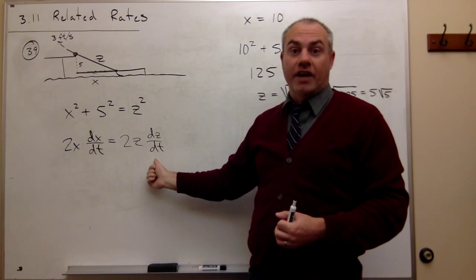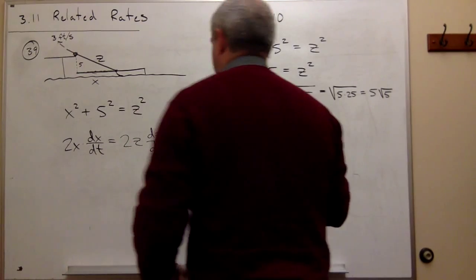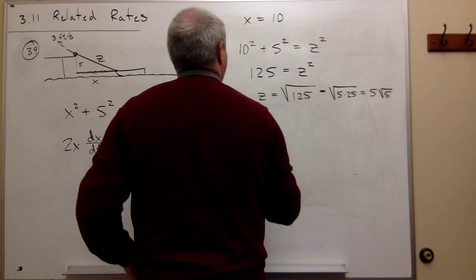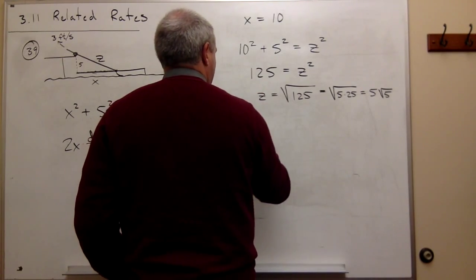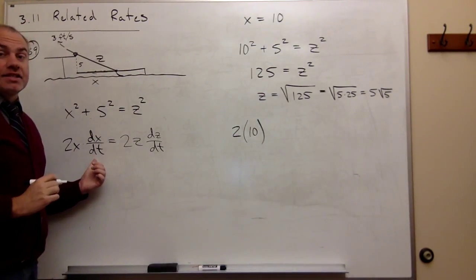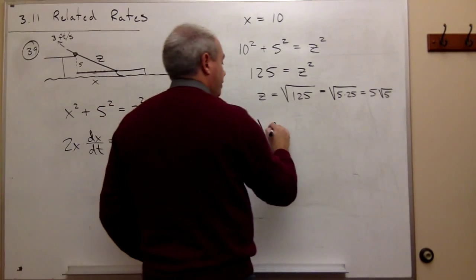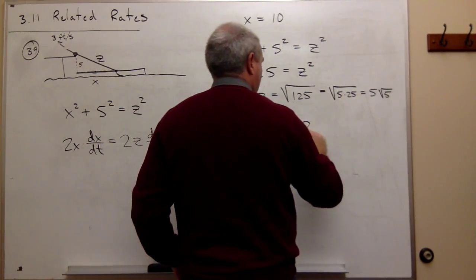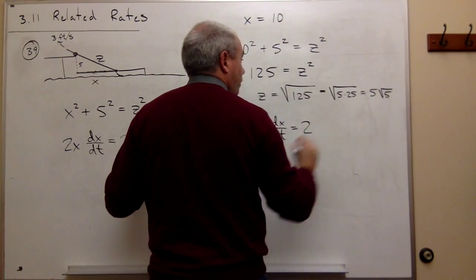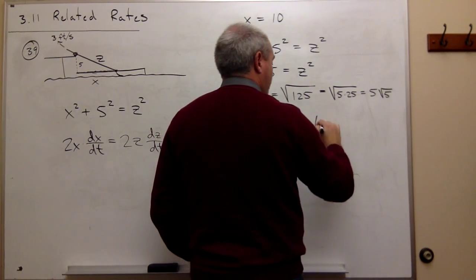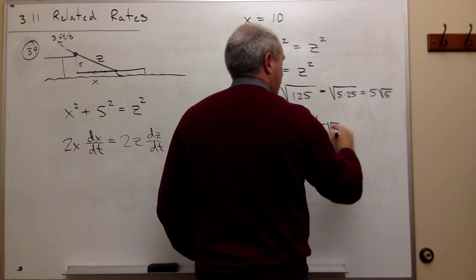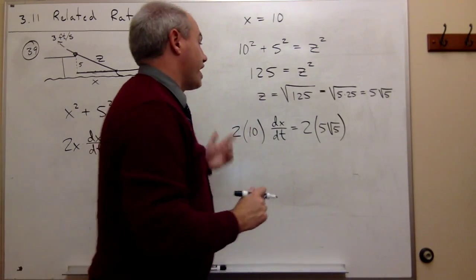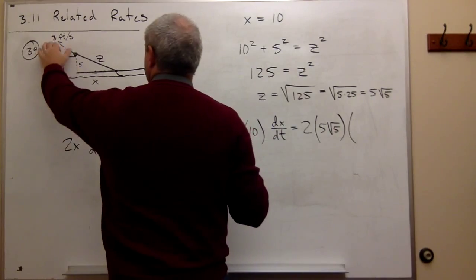Let's plug things in. We've got 2 times x, which is 10, times dx/dt, which is what I'm trying to figure out. That is equal to 2 times z, which now I know is 5√5, times dz/dt, which now I know is -3.